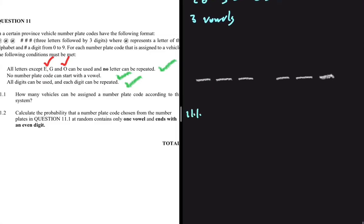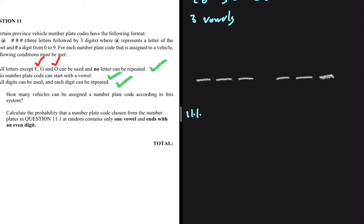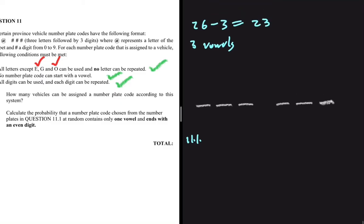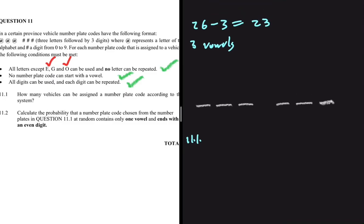The counting principle is very unforgiving — you need to think of all possible situations, all possible scenarios, all different ways of counting. Question 11.1 asks: how many vehicles can be assigned a number plate code according to this system? In the first position, we need to respect our second condition.